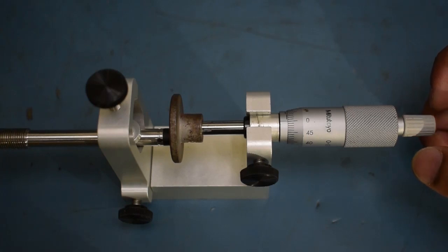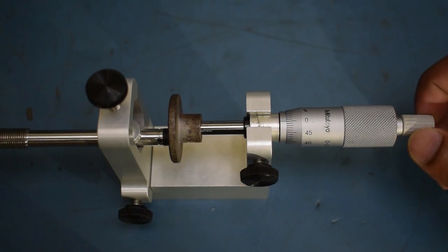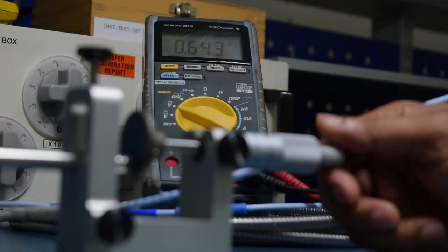Set the zero of micrometer when the target plate gently touches the probe. You can hear the click sound when the target plate touches the probe tip. Note down the voltage reading.